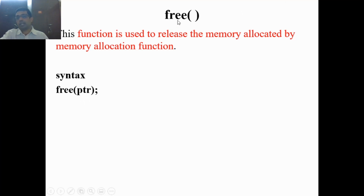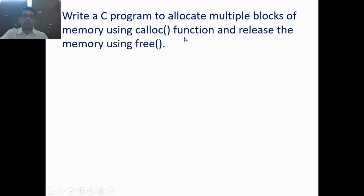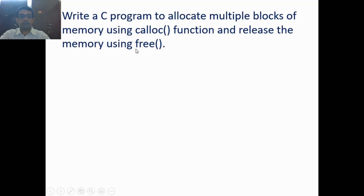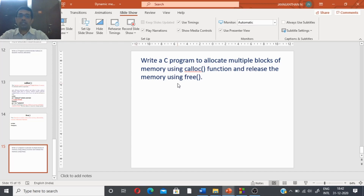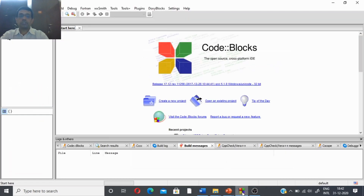The free() function also has its prototype in the header file stdlib.h. Now we will write a C program. Our problem is: write a C program to allocate multiple blocks of memory using calloc() and release the same using the free() function. After our purpose is over, we have to release the memory.